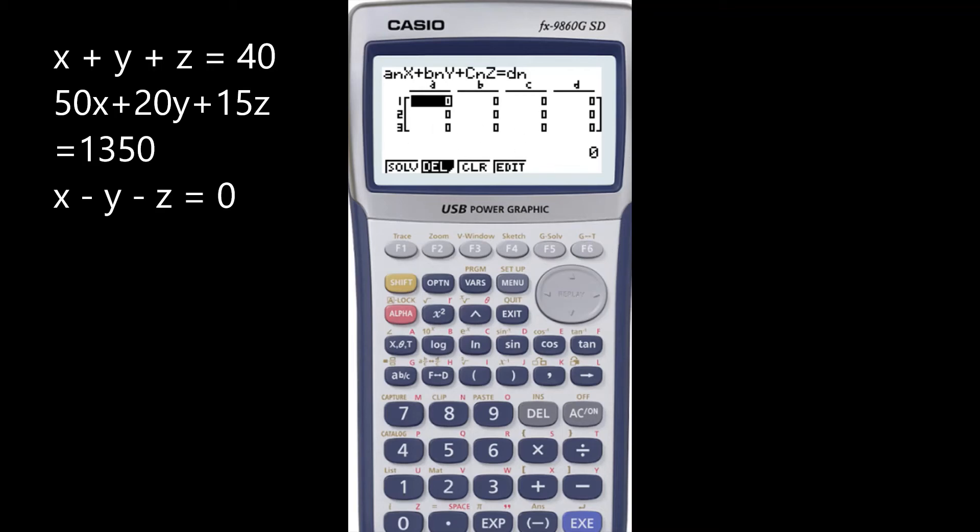The first equation x + y + z = 40, so it's 1x, 1y and 1z equals 40. Very easy to enter those. Then the second one was 50x, that was the price for the jersey, 20y and 15z equals 1350 dollars.